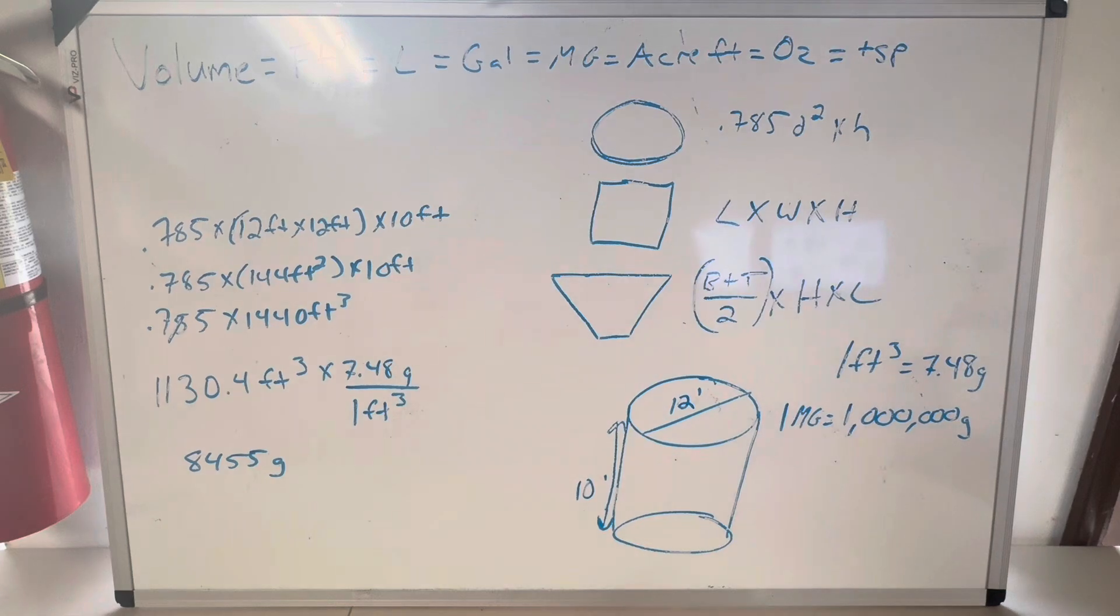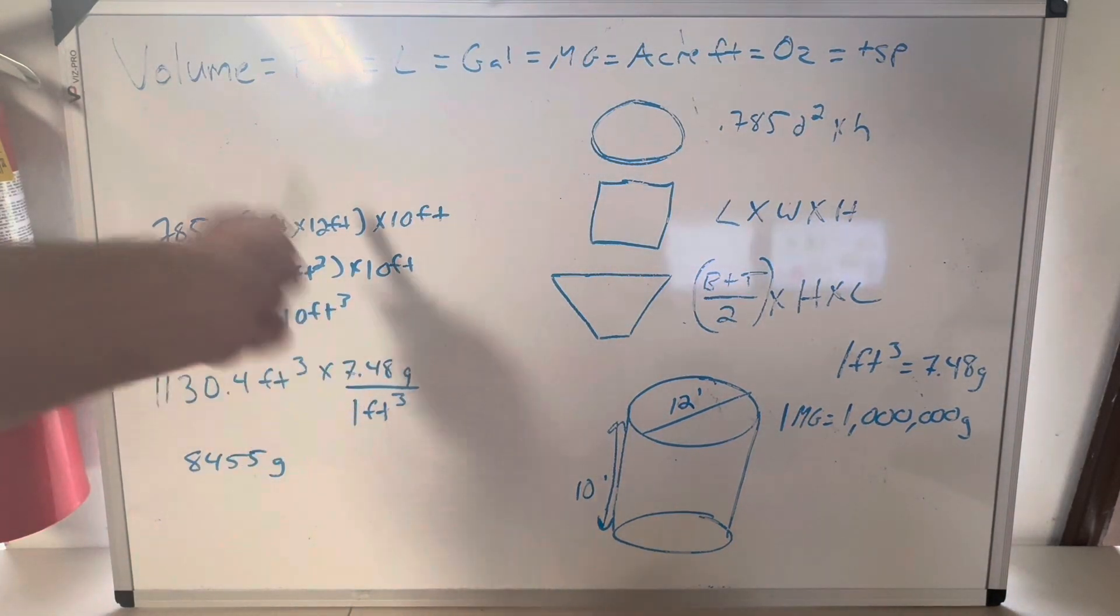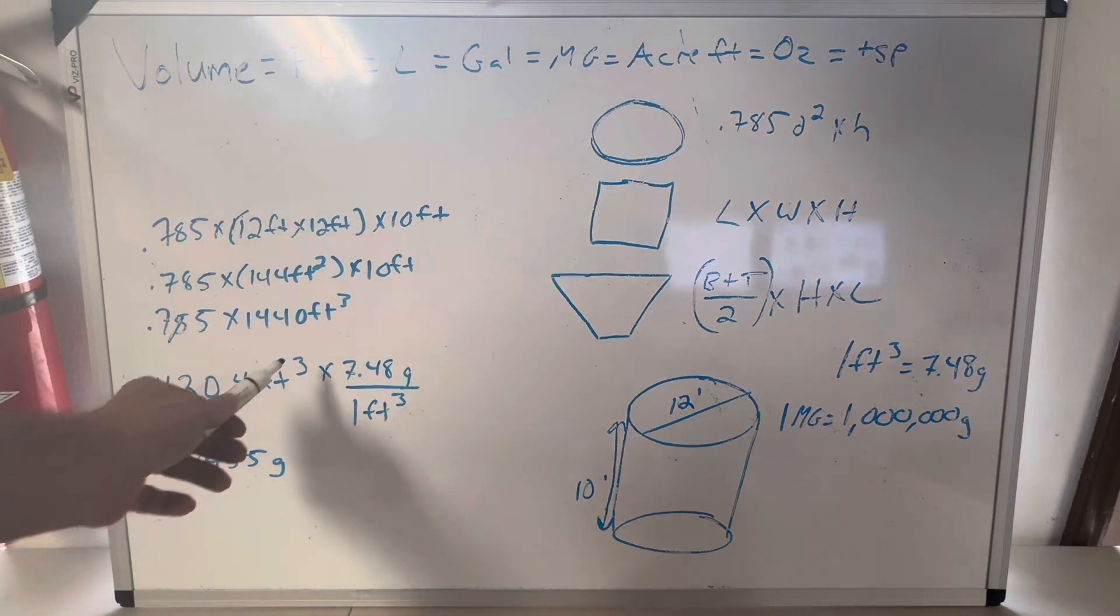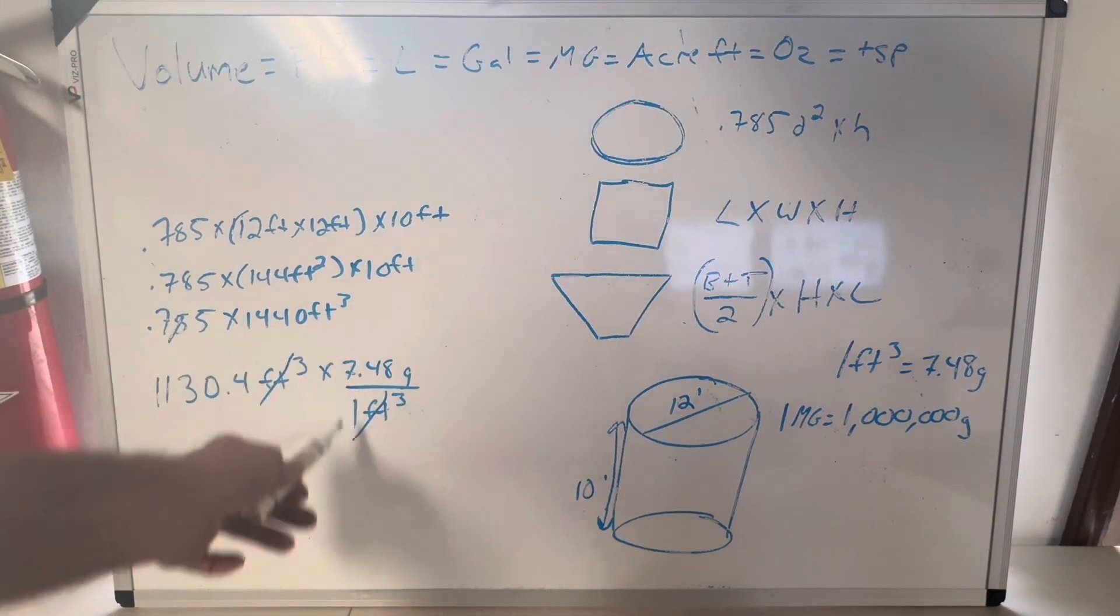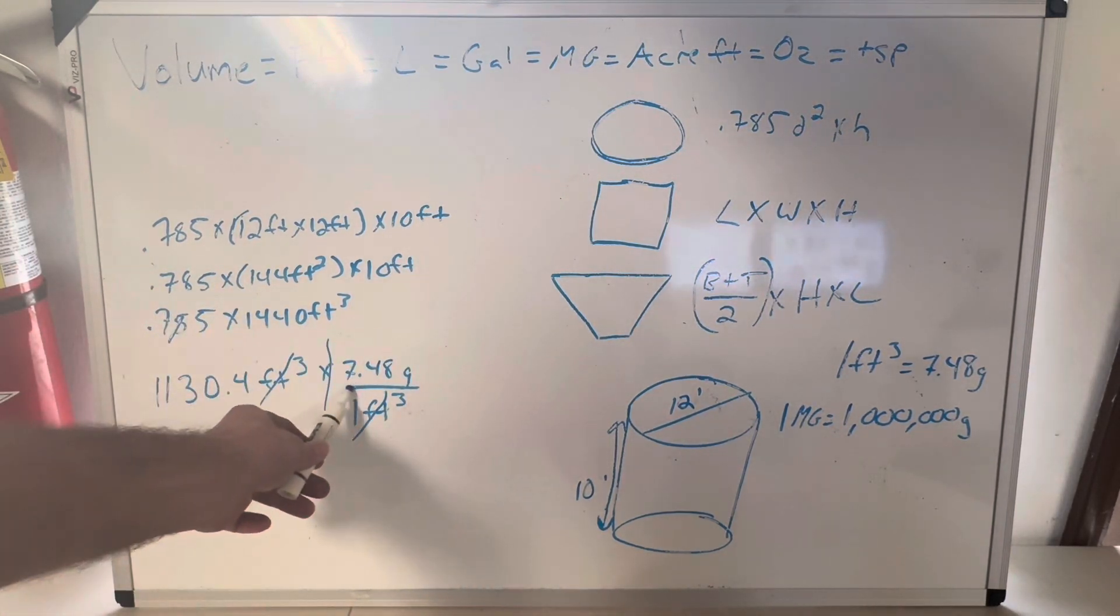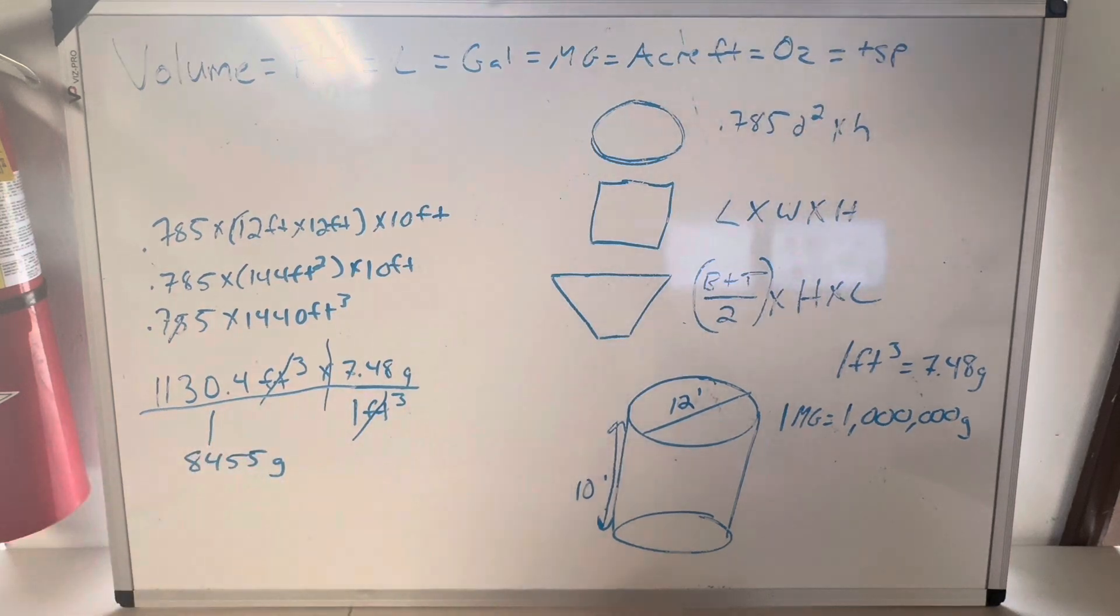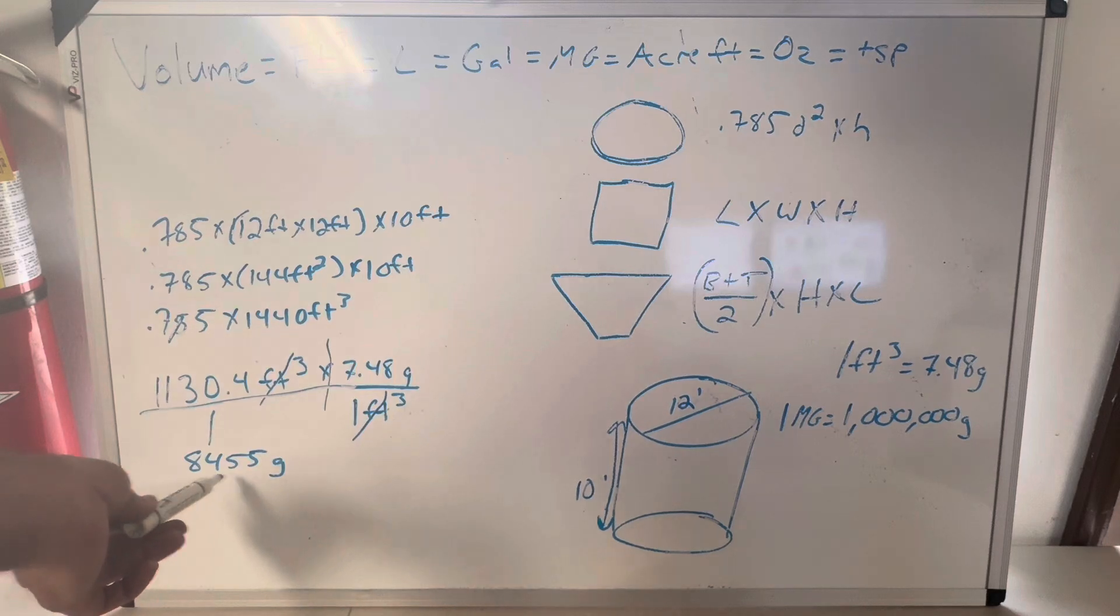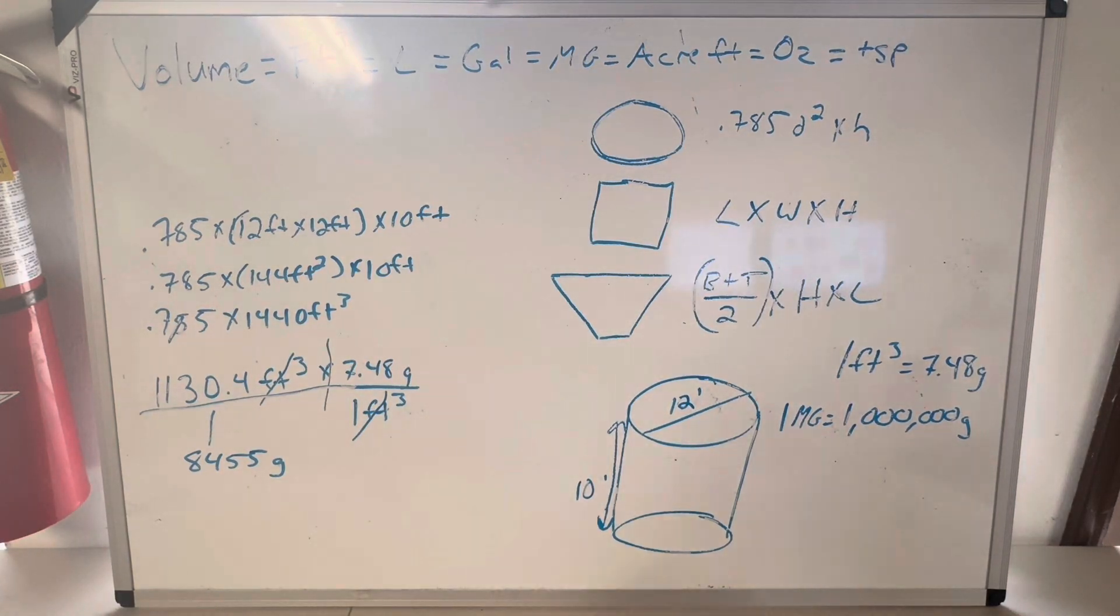But I want to solve for gallons. So I'm going to multiply that by 7.48 gallons. I wanted to show you this unit conversion here. This is how units cancel out. Some people draw ladders and whatnot, and then you divide what's on the bottom and you multiply what's on the top. So we're going to multiply by 7.48, 7.48 gallons per one cubic foot. They cancel out and you're left with 8,455 gallons in that cylinder.